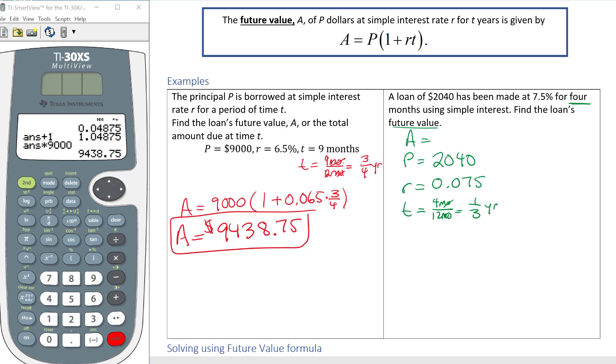Then it says find the future value, so that's the thing I don't know. So I'm going to plug this in: A equals 2040 parentheses 1 plus 0.075 times one-third of a year.